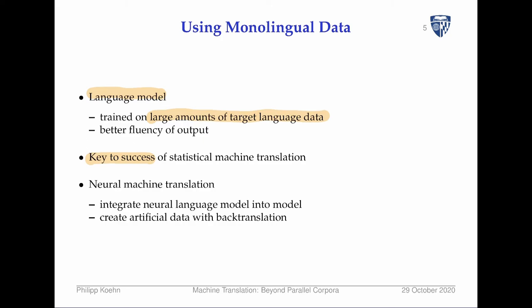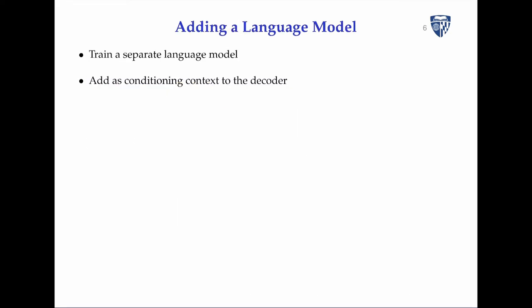What is more commonly done is to create artificial data via back translation. But let's look at both options. First, let's look at adding a language model. Training a separate language model should be straightforward — we talked about training language models before translation models with deep learning. We can then add that as conditioning context to the decoder.